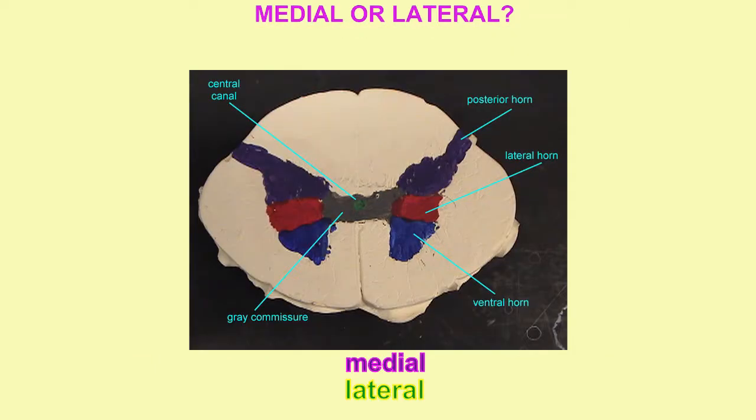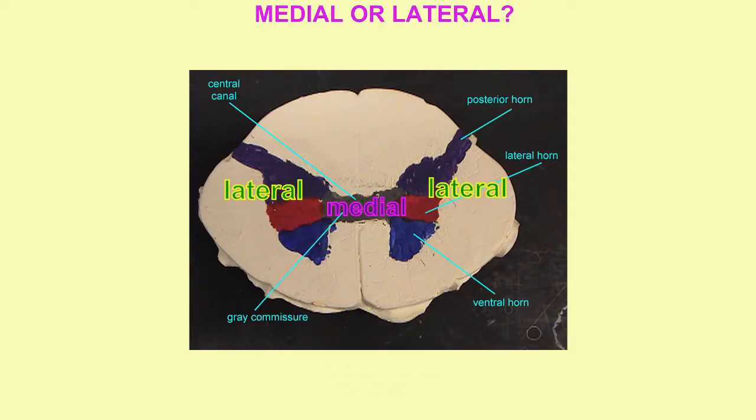In the spinal cord, the central canal and gray commissure are along the midline and medial, while the posterior, lateral, and ventral horns would be lateral to those regions.